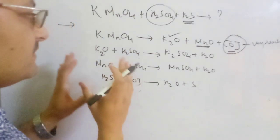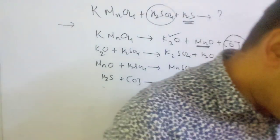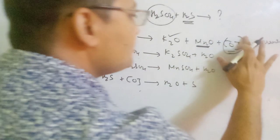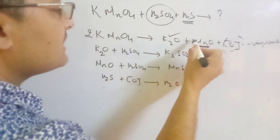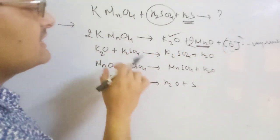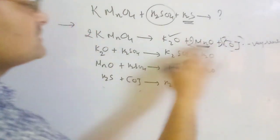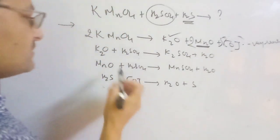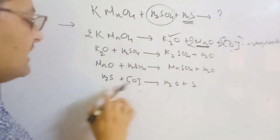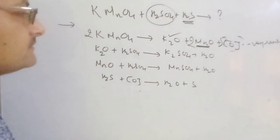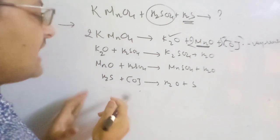So the first step — writing partial equations — is finished. Now we must balance each partial equation. For the KMnO₄ decomposition: K₂ gives 2K, and there are 2 manganese, so you put 2 here, and put 8 oxygen on this side, with 3 oxygen already here, so you put 5 here. The H₂SO₄ equations are already balanced. So this first step of writing partial equations and balancing by hit and trial method is finished.